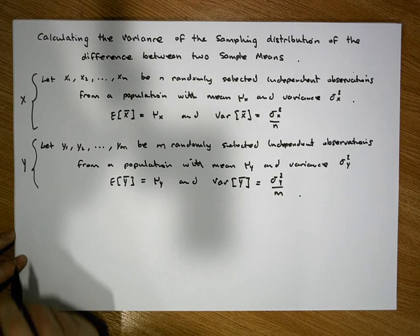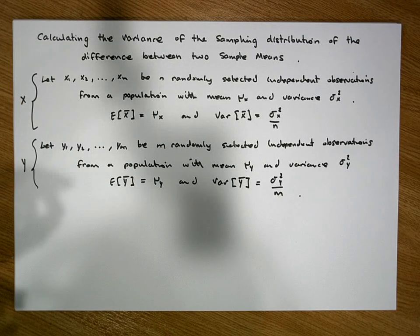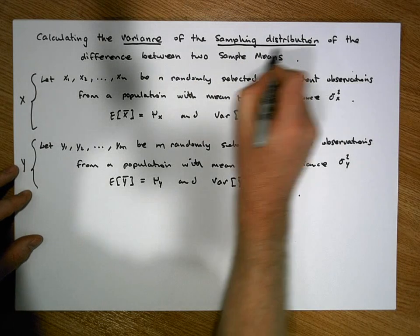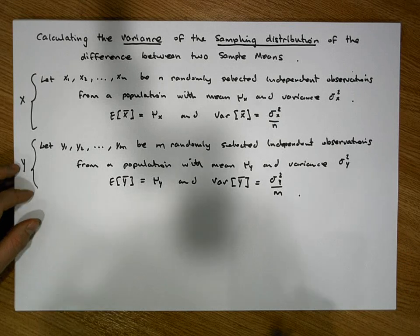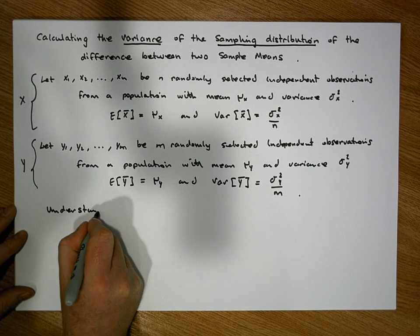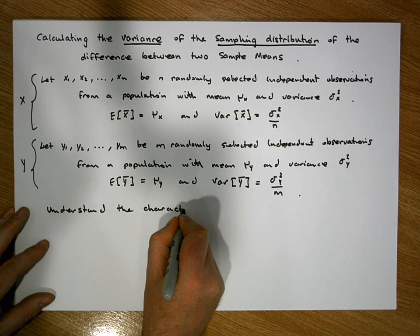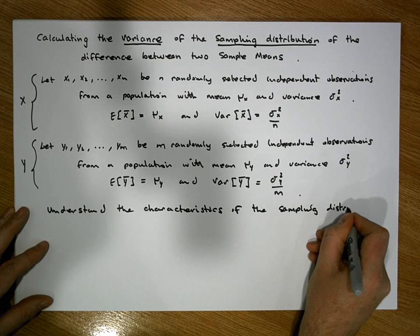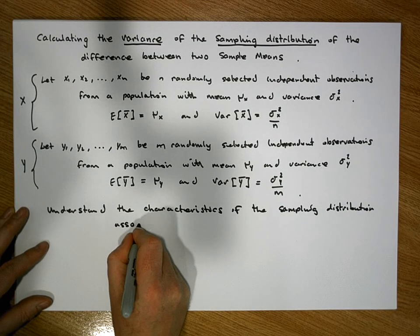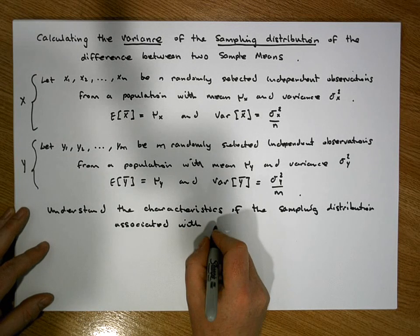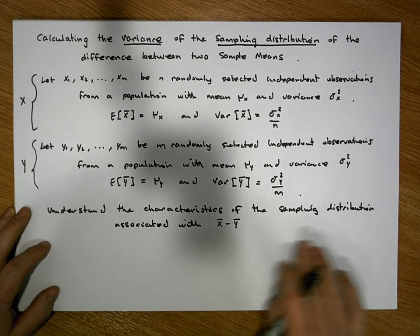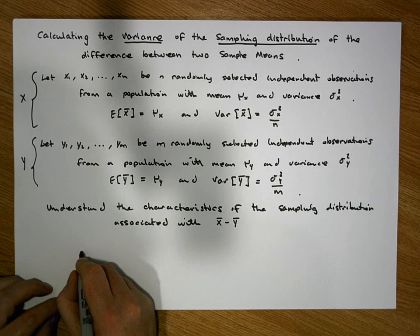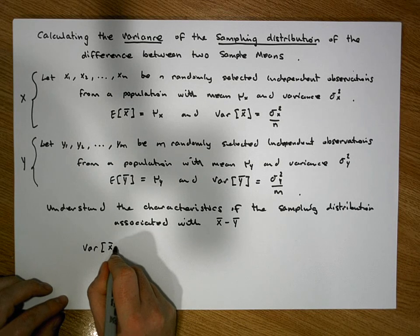The two random variables X and Y are independent of each other — that's important. For this video we want to calculate the variance of the sampling distribution of the difference between two sample means. Specifically, we'd like to understand the characteristics of the sampling distribution of X-bar minus Y-bar, and calculate the variance of X-bar minus Y-bar.